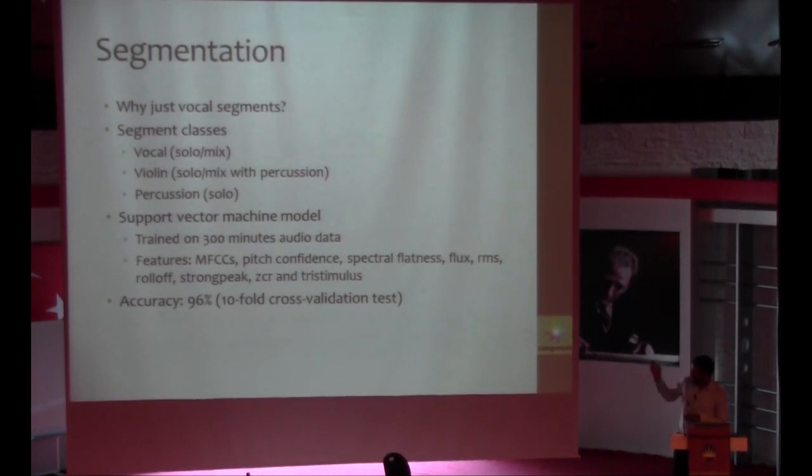In order to do so we train a support vector machine to distinguish between primarily three segment classes which are vocal, whether it is solo or mixed with other accompanying instruments, and violin and percussion. And it performs decently with 96% accuracy on 300 minutes of audio data in a tenfold cross-validation test.